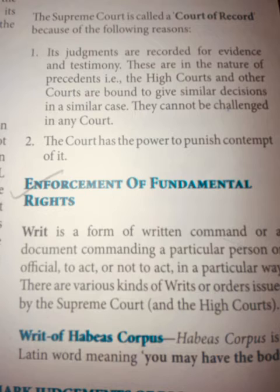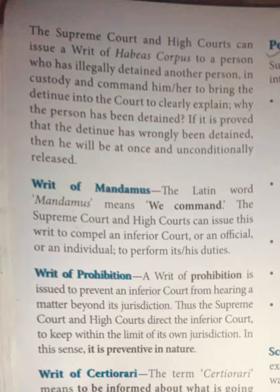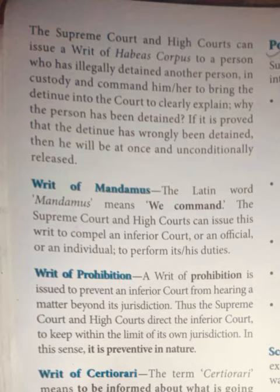There are various kinds of writs issued by the Supreme Court and High Court. First: Writ of Habeas Corpus. Habeas corpus is a Latin word meaning 'you may have the body.' The Supreme Court and High Court can issue a writ of habeas corpus to a person who has illegally detained another person, ordering them to bring the detainee into court to clearly explain why that person is being detained. If it is proved that the person was wrongfully detained, he or she will be at once unconditionally released.